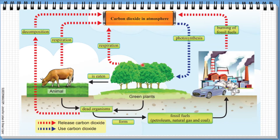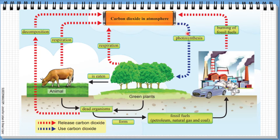Now let us look at this diagram, which is taken from your textbook. The blue arrow here indicates the use of carbon dioxide — guna carbon dioxide — from the atmosphere. Whereas the red arrow indicates the release of carbon dioxide. So first, the green plants absorb carbon dioxide from the atmosphere to undergo the process of photosynthesis.